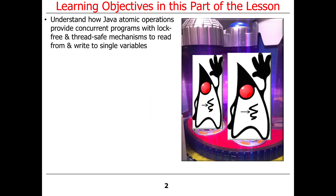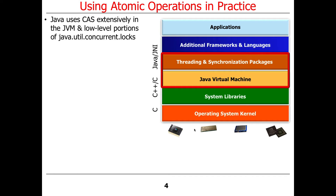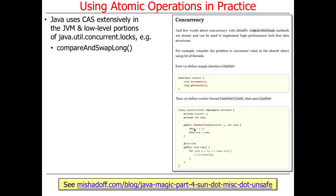All right, part two. What we're going to talk about here is give you some further examples of how this stuff works, and I'll describe it in terms of how it's applied to Java and Java AtomicLong. Java uses compare-and-swap extensively in the virtual machine implementation and in lower-level portions of the java.util.concurrent locks package, and also java.util.concurrent, because there's some synchronizers like semaphores that lurk in a different package or in a parent package. So we're going to see how compareAndSwapLong is used.